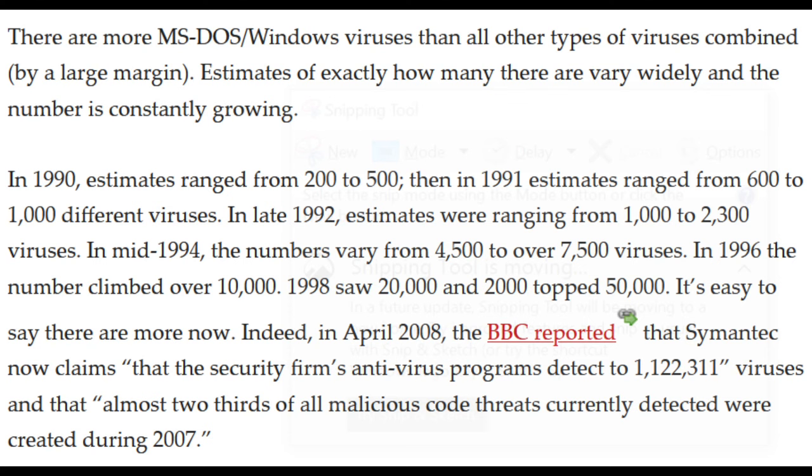In 1990, estimates ranged from 200 to 500. Then in 1991, estimates ranged from 600 to 1,000 different viruses. In late 1992, estimates were ranging from 1,000 to 2,300 viruses. In mid-1994, the numbers vary from 4,500 to over 7,500 viruses. In 1996 the number climbed over 10,000.